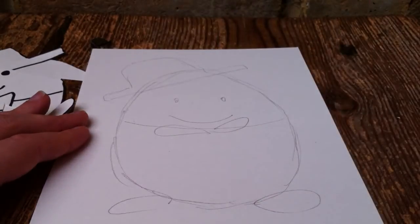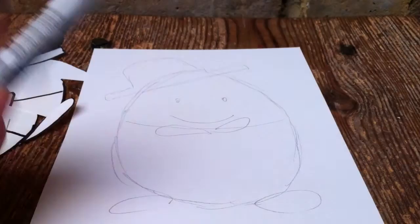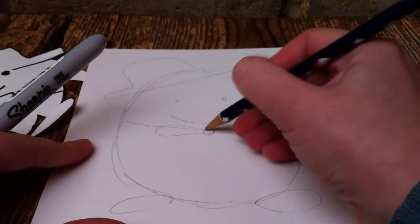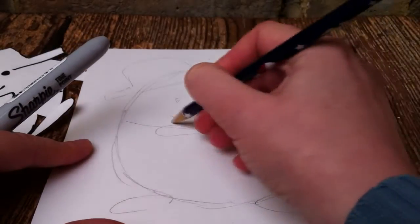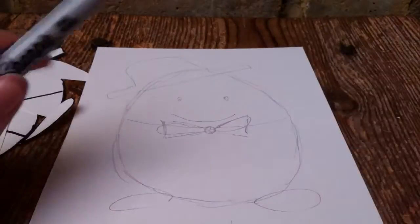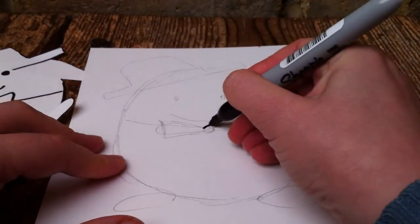Once you're sort of happy - sometimes I go over it a few times like that, and then I need to get it neat. You simply take a black pen and go over it.